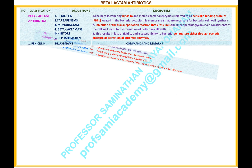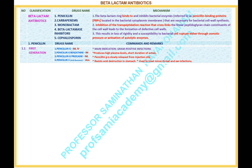Number 1.1 — Name of the classification: Penicillins, first generation. Drugs under this classification: 1. Penicillin G, available route: intramuscular and intravenous. 2. Penicillin G benzathine, available route: intramuscular. 3. Penicillin G procaine, available route: intramuscular. 4. Penicillin V, acid-resistant, available route: oral. Comments and remarks — main indication: gram-positive infections. Produces high plasma levels and short duration of action. Penicillin G benzathine is slowly released from the injection site. Penicillin V resists acid destruction in the stomach and is used to treat minor throat and ear infections.